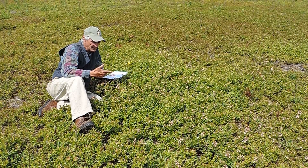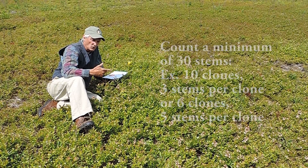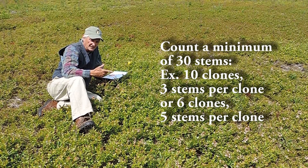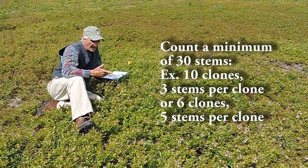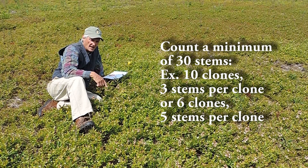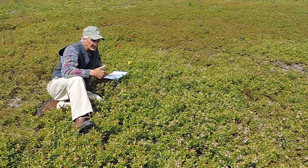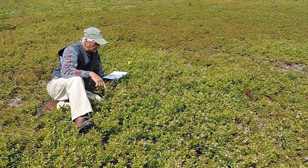What we recommend is that you locate 10 clones and select three stems in each of the 10 clones, equaling 30 stems that you mark and count. Alternatively, you can locate six clones and mark five stems in each clone, again yielding about 30 stems as a minimum that you mark and count throughout your field.